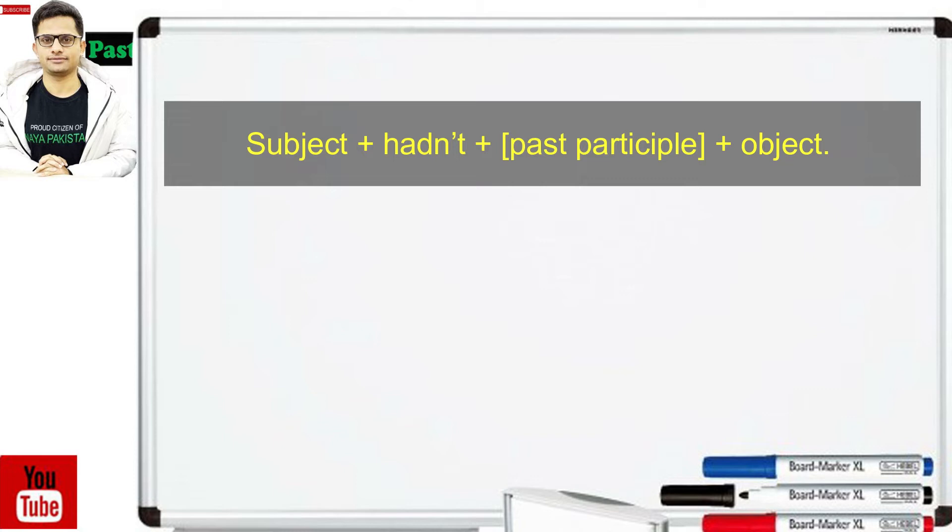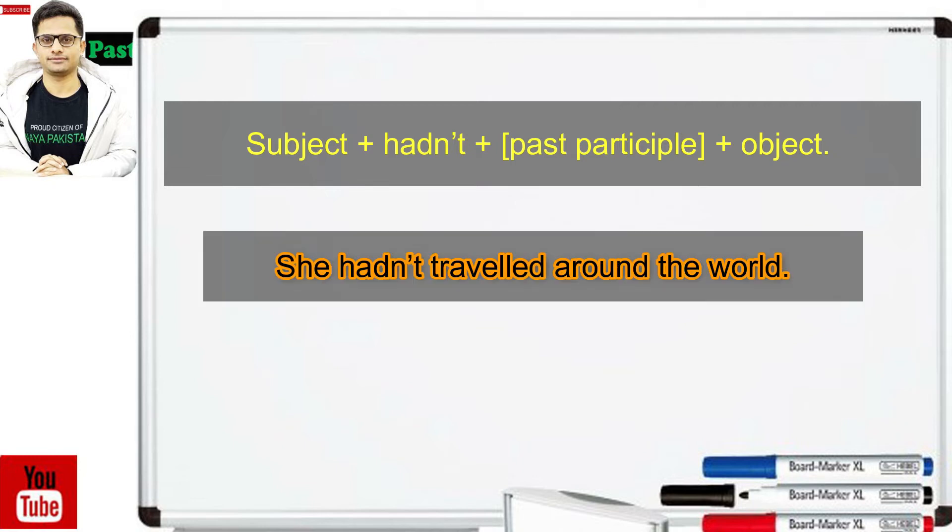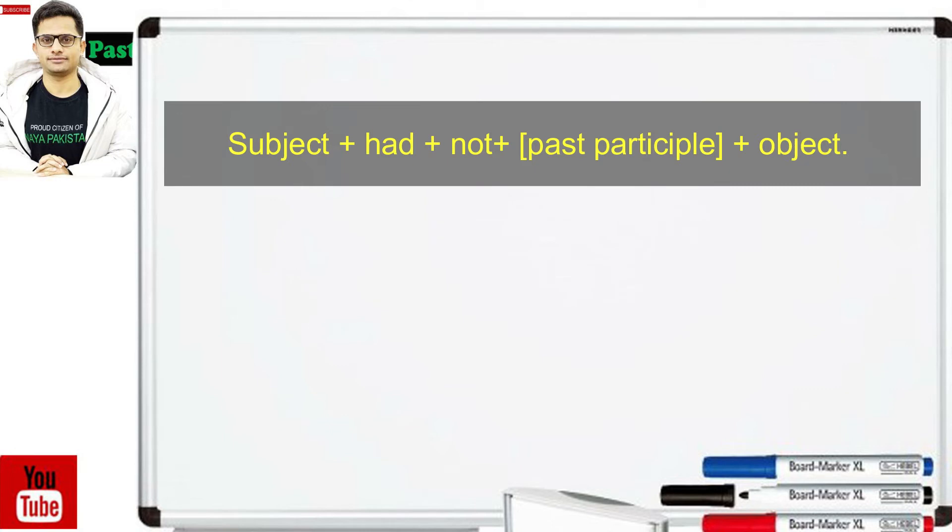غیر رسمی گفتگو ظاہر ہم اپنے دوستوں سے کرتے ہیں لیکن اگر بات آ جائے written communication کی یا official language کی تو دفتری زبان میں ظاہر ہم جو لکھتے ہیں email لکھتے ہیں یا letters لکھتے ہیں تو وہاں پر full forms کا استعمال ہوتا ہے۔ So we have a sentence here they had not had a chance to develop themselves. انہیں خود ترقی کرنے کا موقع نہیں ملا تھا۔ Subject plus had plus not plus past participle plus object.